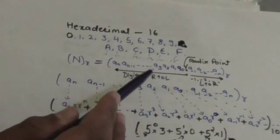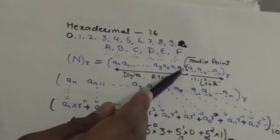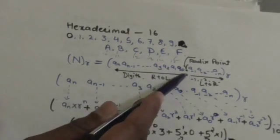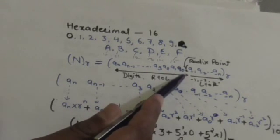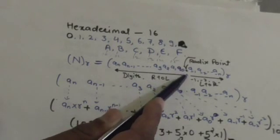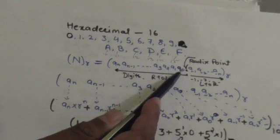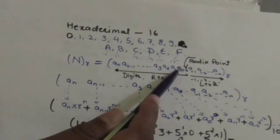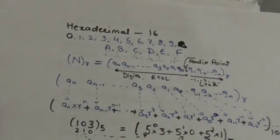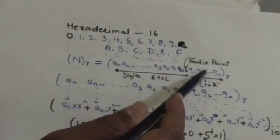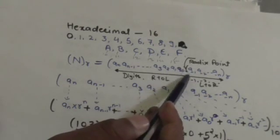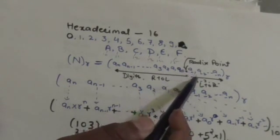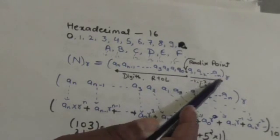The digits which are at the left of the radix point — a0, a1, a2, a3 — have their positions numbered from right to left, starting from 0. For digits at the right of the radix point, their subscripts are numbered negatively: minus 1, minus 2, minus 3, and so on.